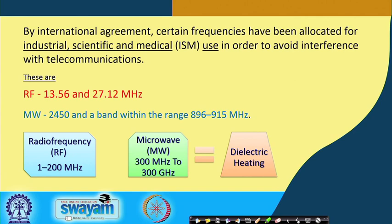Under international agreement, only certain frequencies are allowed for industrial, scientific and medical use, to avoid interference with the federal telecommunication system, since the same sort of radiations are also used in telecommunication. Radio frequency operations in dielectric heating may be of two forms: radio frequency heating or microwave heating.